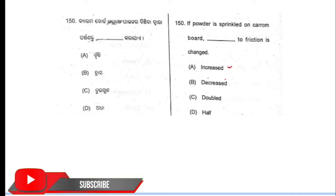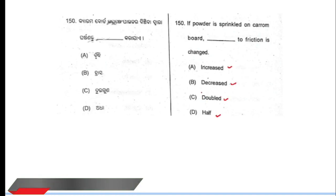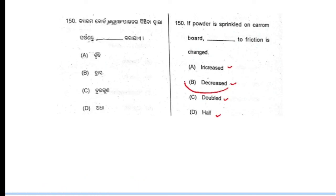Next question: if powder is sprinkled on a carom board, the friction is changed. Which of the following determines the difference? Question number 150.